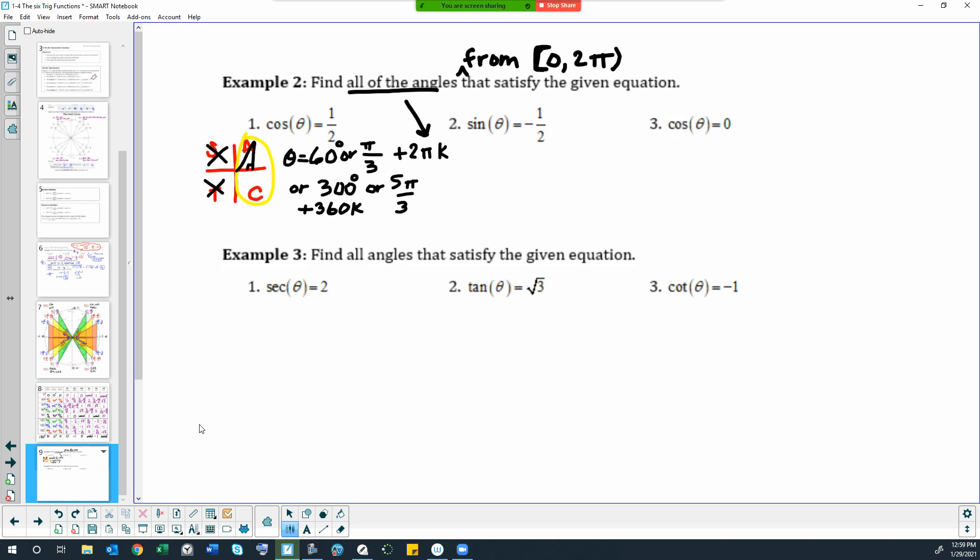So let's figure out what quadrants that would be in. So sine is negative. So all students take calculus. That would mean that we're focusing on quadrants three and four is where sine would be negative. So then where does sine equal one half? Let's just think about where sine is one half. That would be at 30 degrees, right?